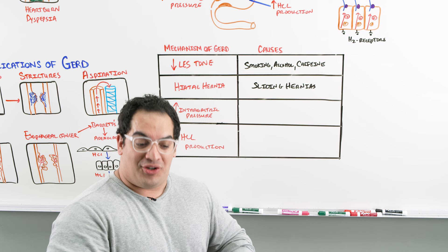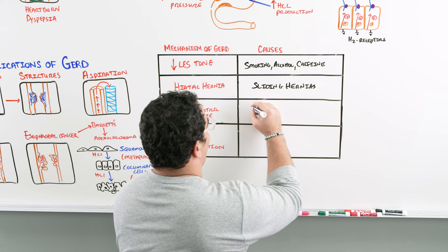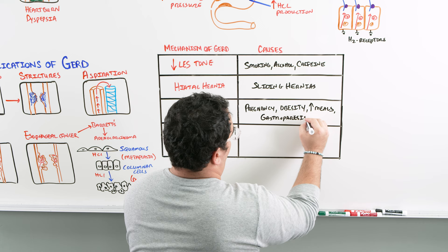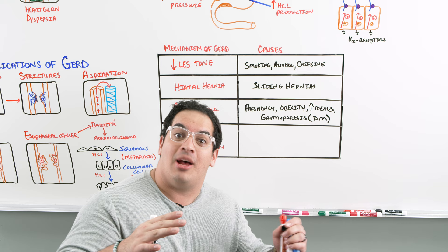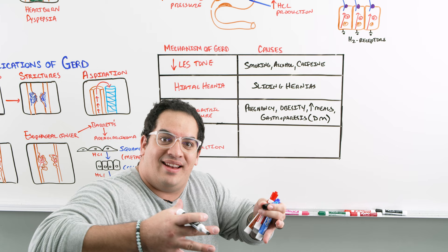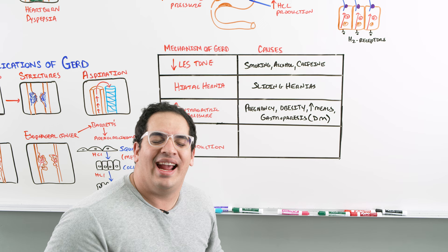What increases intragastric pressure, causing contents to decompress into the esophagus? Pregnancy, obesity, very large meals, and a disease called gastroparesis. Gastroparesis is associated with diabetes — the nerves of the stomach aren't working properly so the stomach can't contract. If you can't contract, you can't empty contents into the duodenum, so the stomach distends and pressure rises, decompressing into the esophagus.